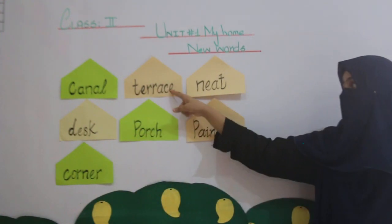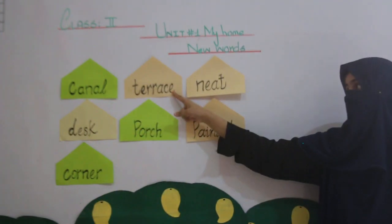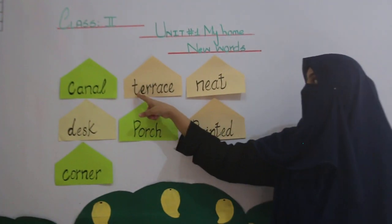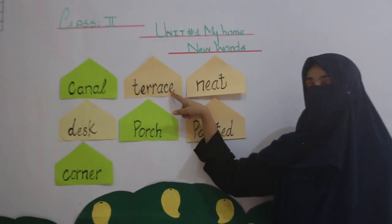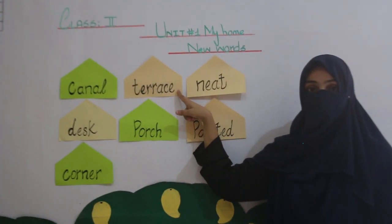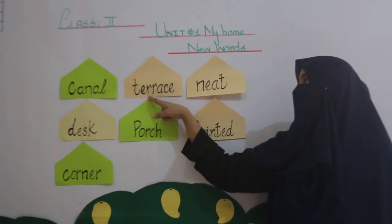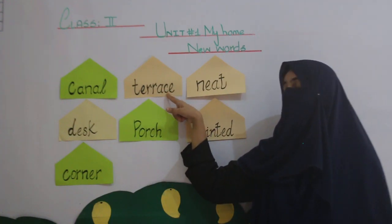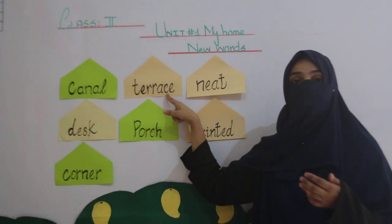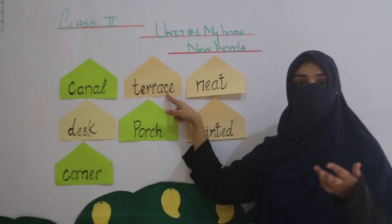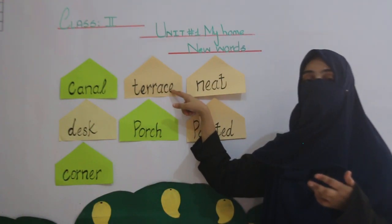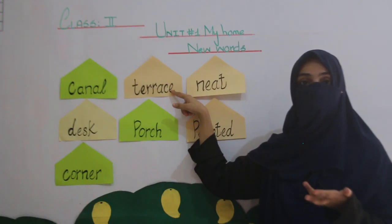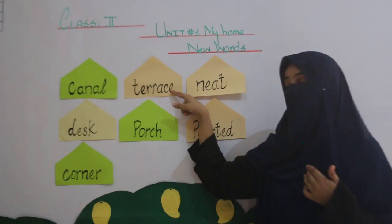Number four word is Terrace. T-E-R-R-A-C-E, Terrace. Terrace aisi jagga hoti hai jo aap ke ghar mein maujud hoti hai, jahan aap araam se bahar ka view dekh sakti ho.